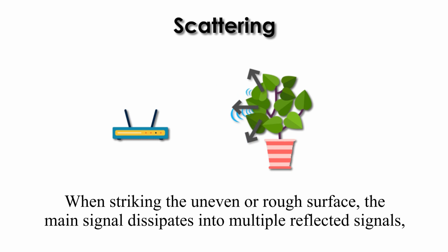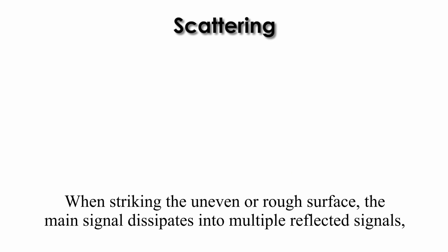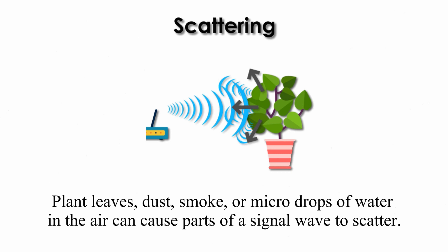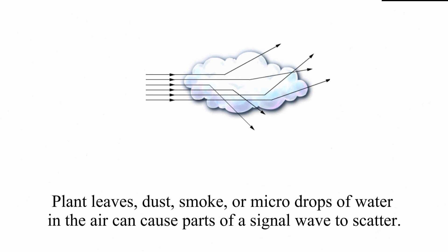When striking an uneven or rough surface, the main signal dissipates into multiple reflected signals, which can cause substantial signal downgrade and may even cause signal loss. Plant leaves, dust smoke, or micro-drops of water in the air can cause signal waves to scatter.